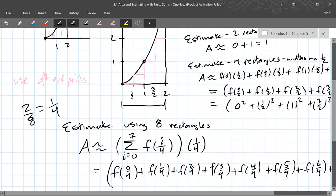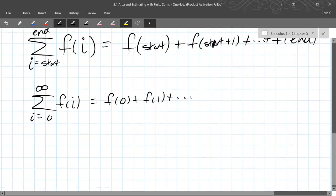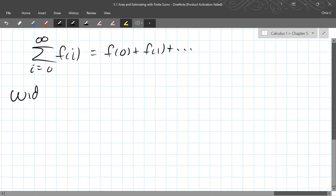And one last little bit of notation. We're going to call the width. So the width of the rectangle is going to be called delta x. Which means change in x. So that's how much you're going to change from one x value to the next x value to the next x value.